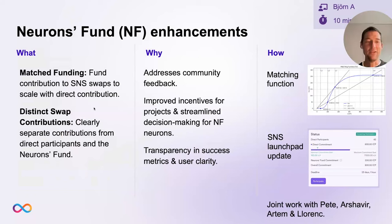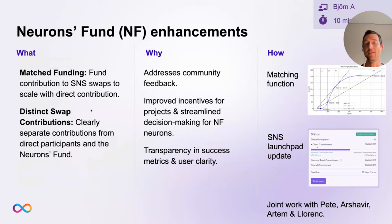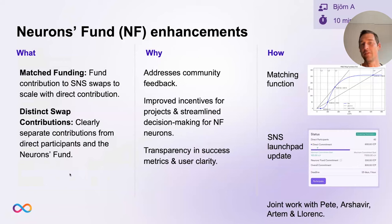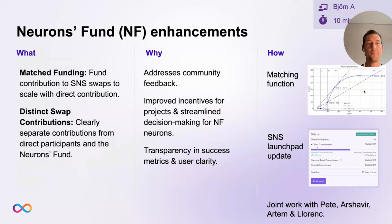Thank you, Jan. This is Björn from the research team. We are currently working on some enhancements of the Neuron Fund, which is a vehicle to support SNS launches. These enhancements contain two features. One is matched funding — the idea is that the fund should contribute aligned with what the swap collects from direct participants. The second is to make it more clear in the UX what funds are coming from direct participants versus the Neuron Fund.